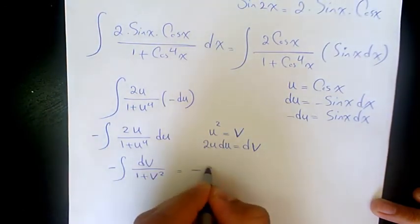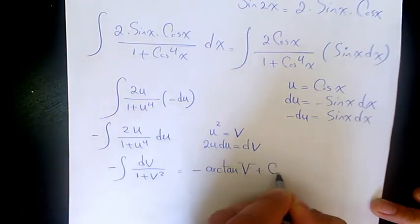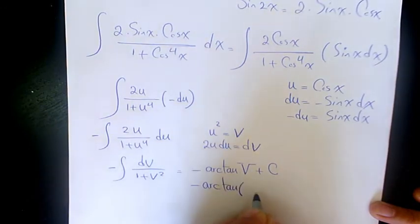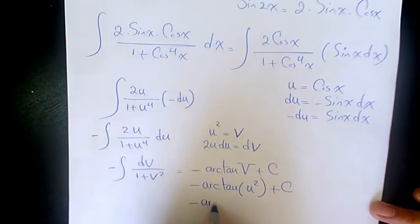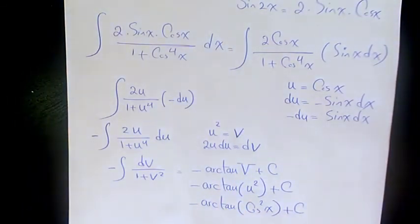Which will be negative arc tan v plus a constant number, which is going to be negative arc tan u squared plus a constant number, or negative arc tan cosine squared x plus a constant number.